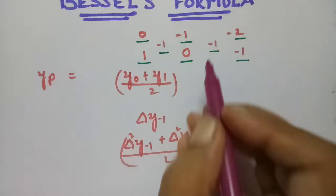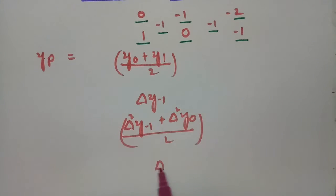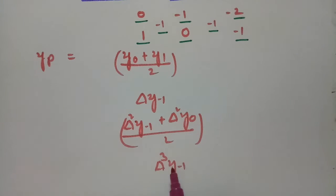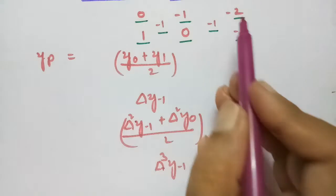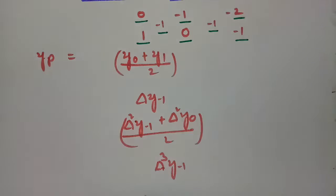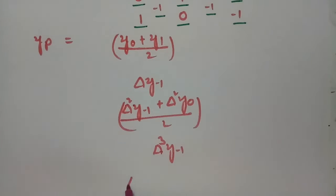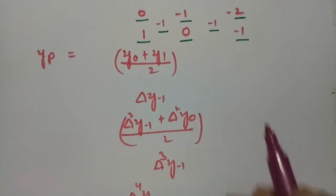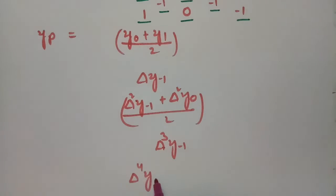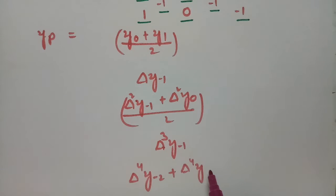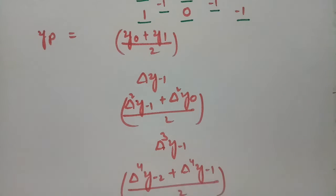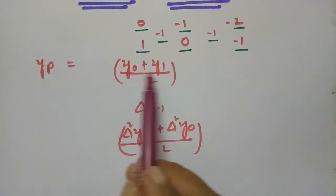The next one is a single value: delta cube y minus 1. And the next one we take the average of these 2. After cube it is 4, that is delta to the power 4 y minus 2, plus delta to the power 4 y minus 1, by 2. So the pattern is: average, single, average, single, and next average.